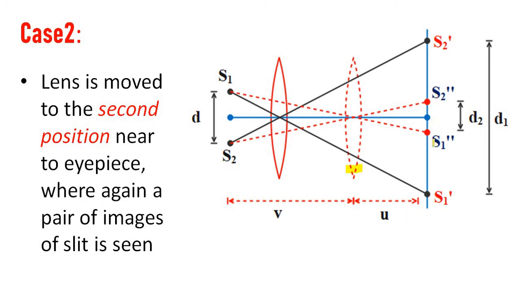That pair of images is S1 prime and S2 prime. This is the source S1 and S2. The pair of images is S1 double prime and S2 double prime.